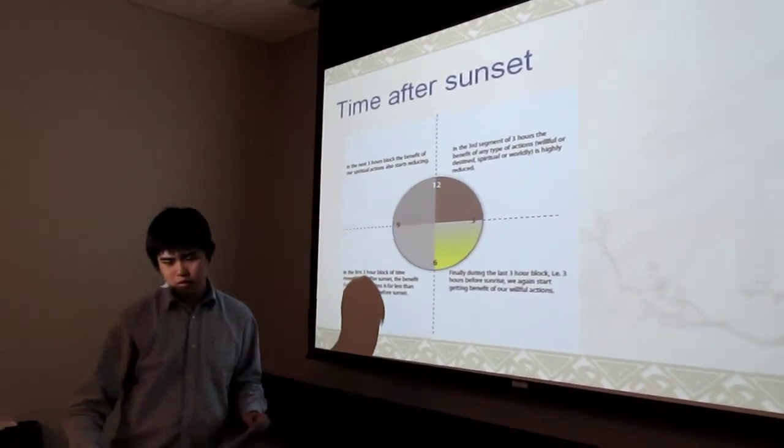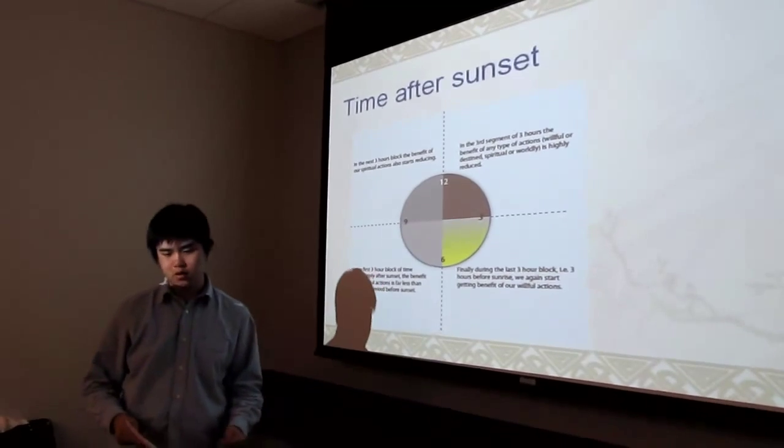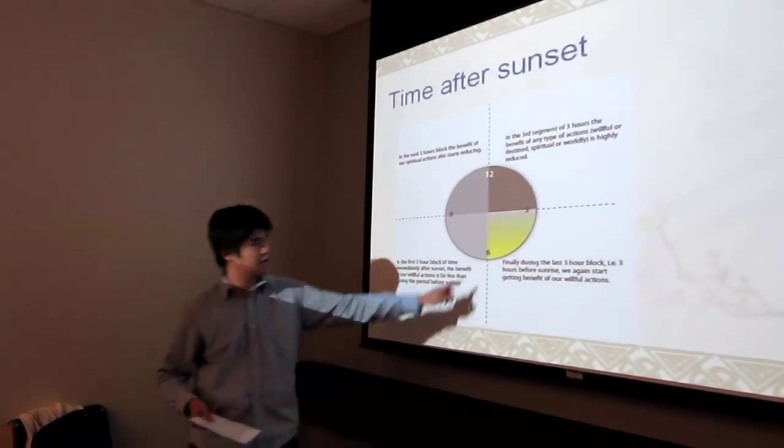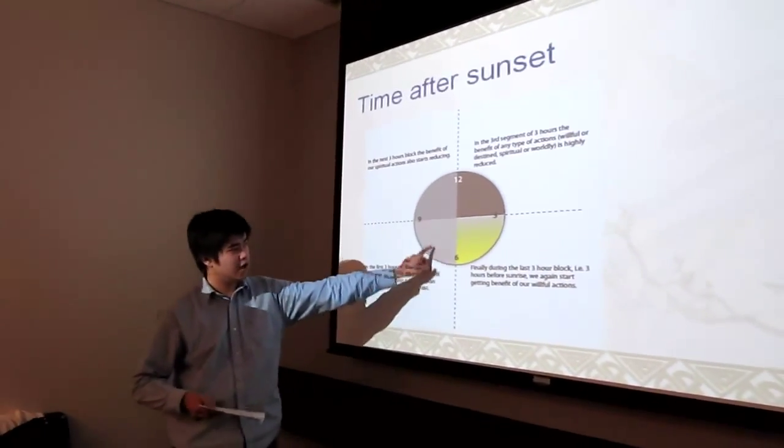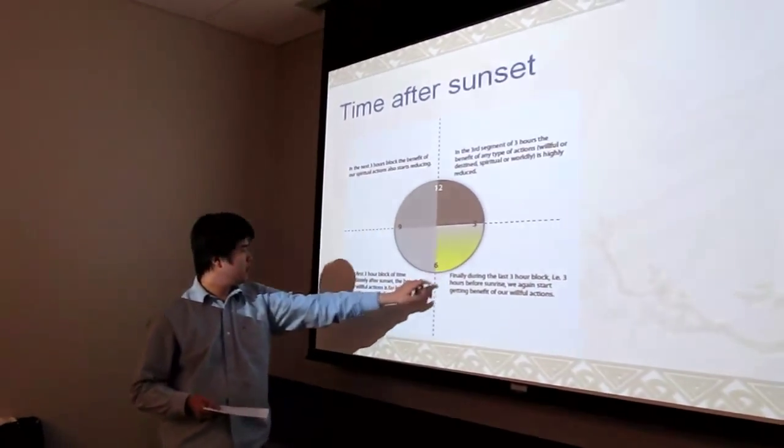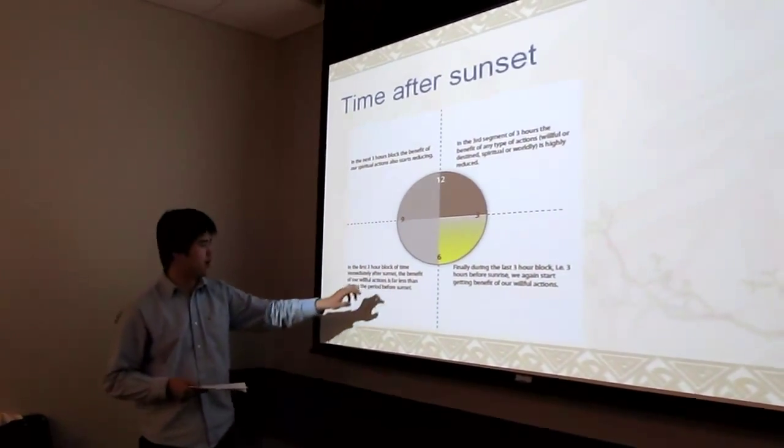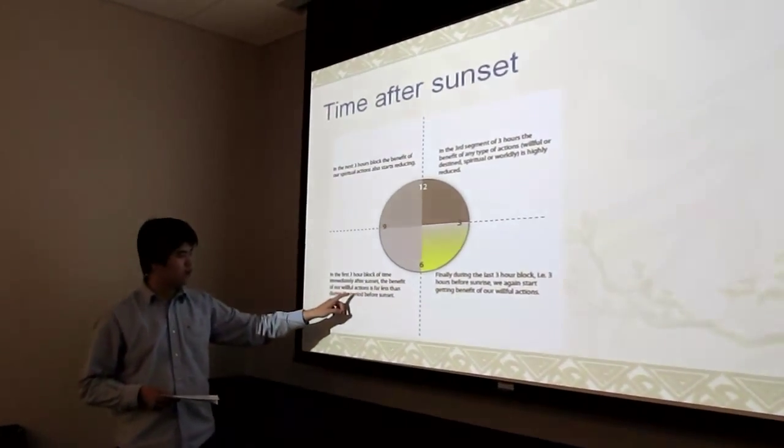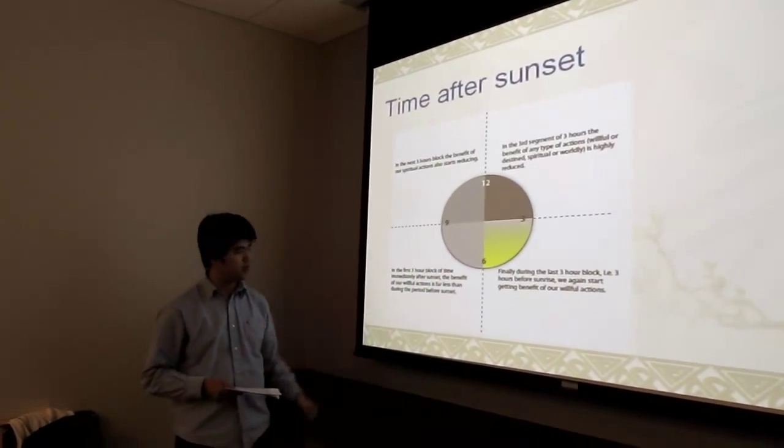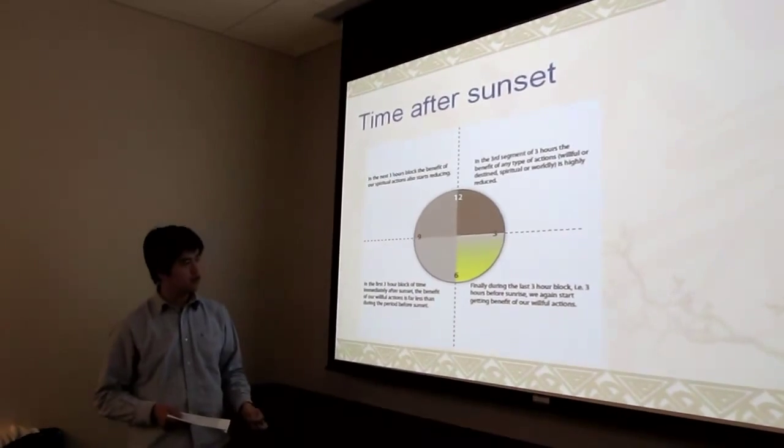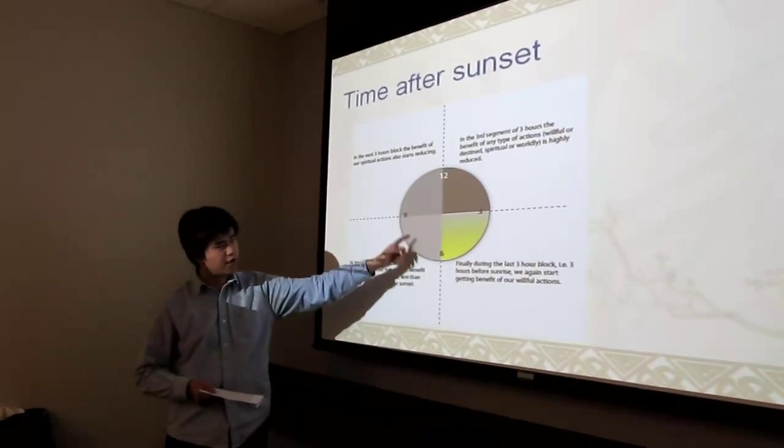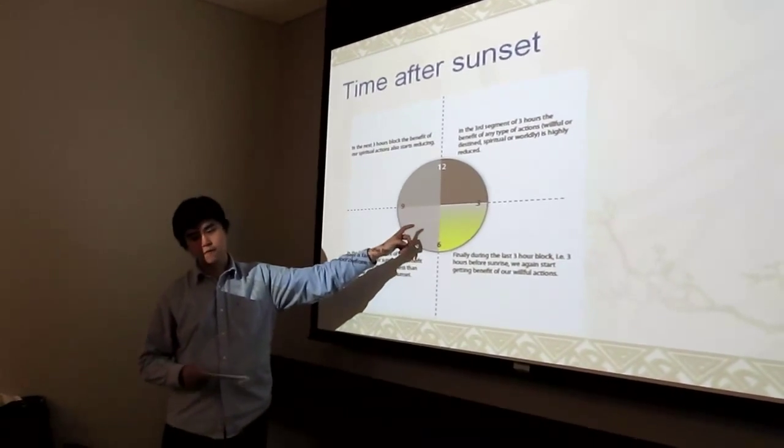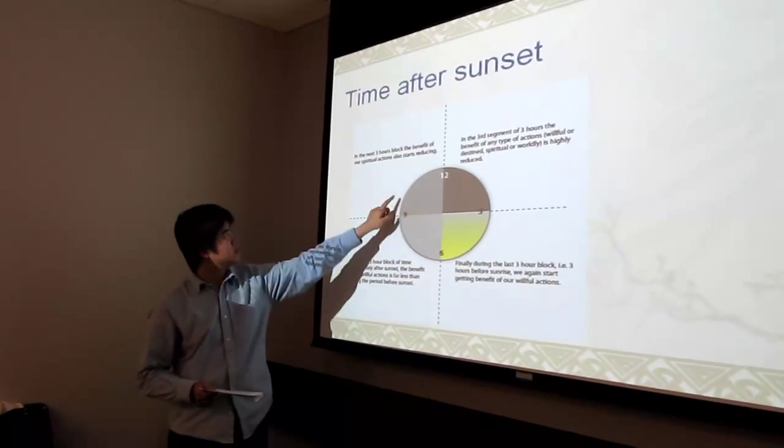I will separate the time after sunset by four blocks. We can see it starts at 6 p.m. and ends at 6 a.m. In this first three-hour block of time, immediately after sunset, the benefit of our willful action is far less than during the period before the sunset. That means in this part, you have high activity, so your work is in fantasy.